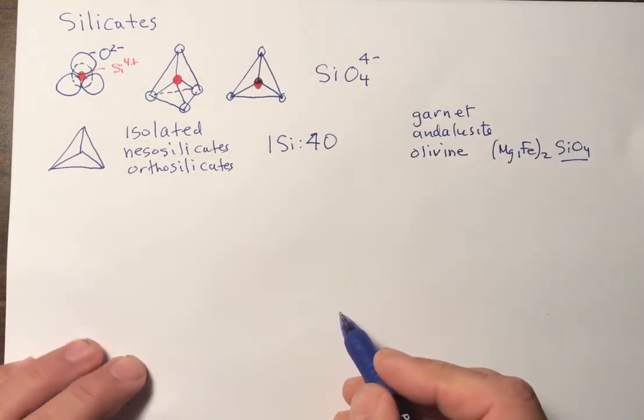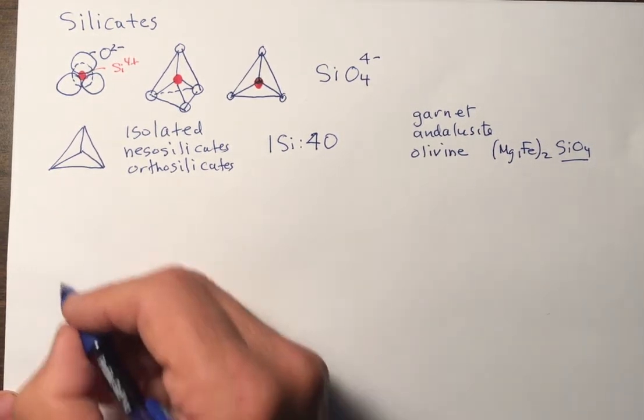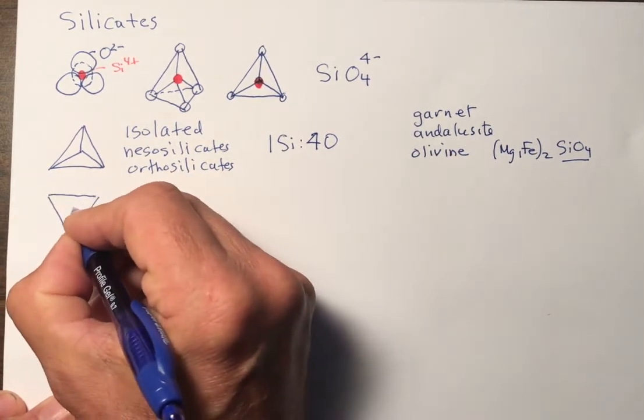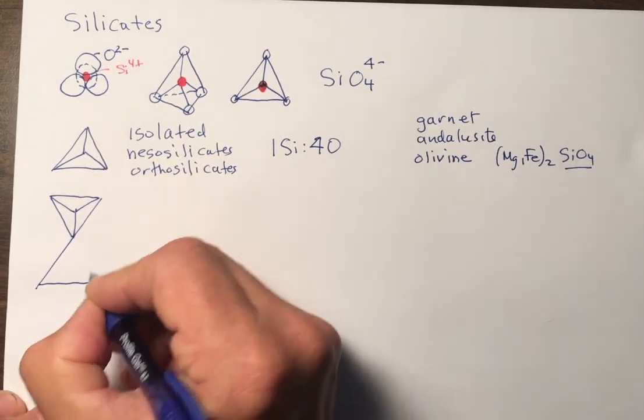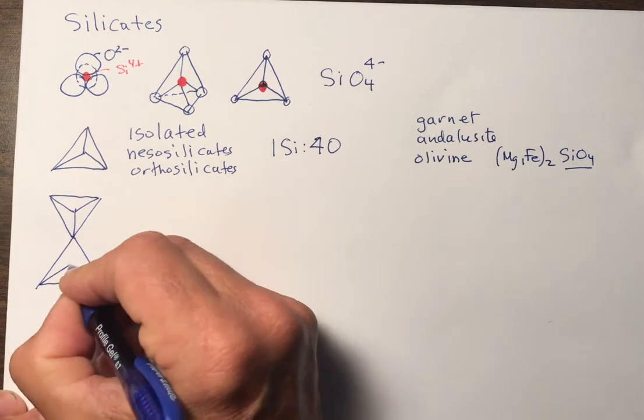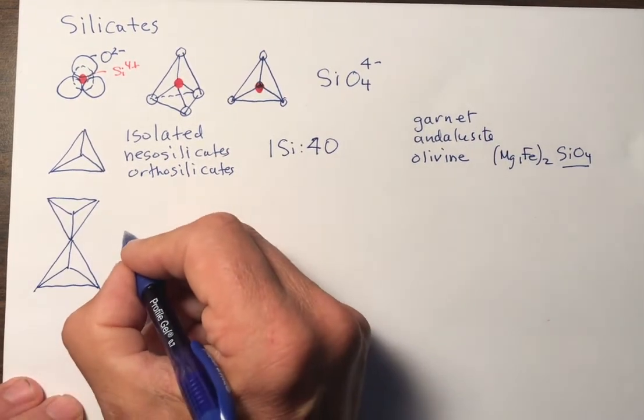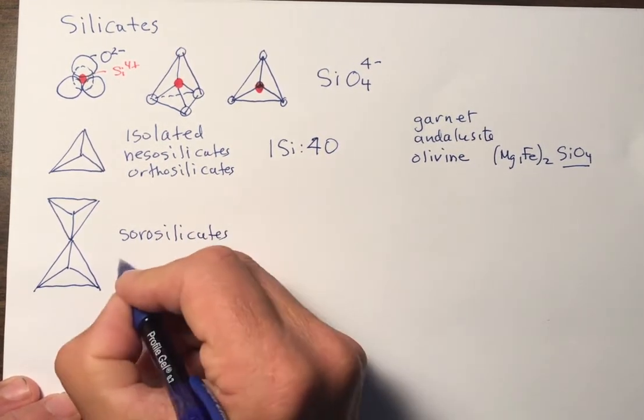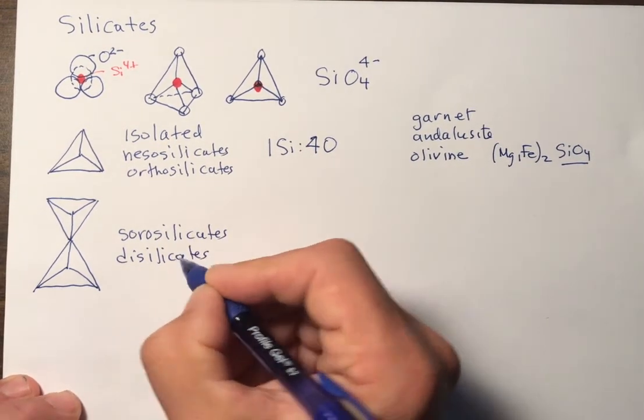So the next group of minerals are where we share one oxygen between two adjacent silicate tetrahedra. And you can see they share one oxygen. And these are called sorosilicates or disilicates.